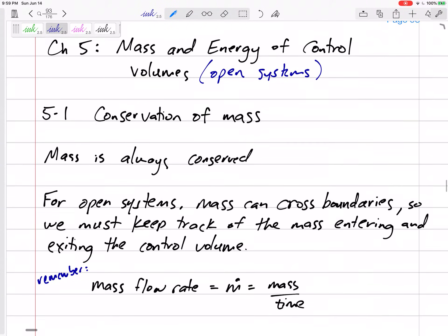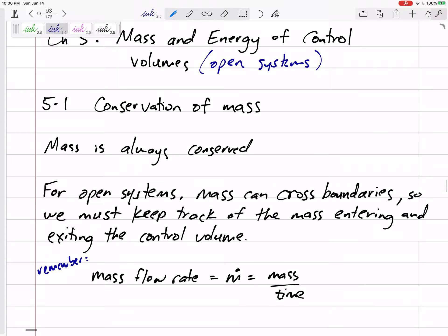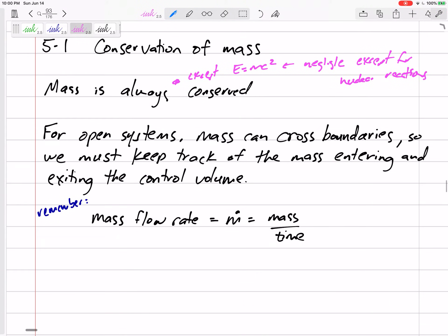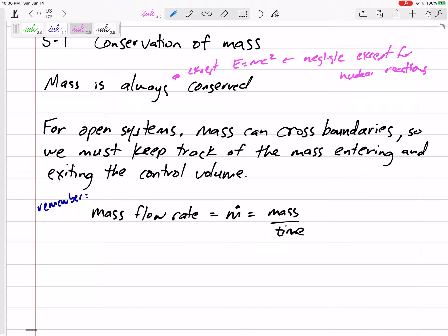And so we need to really be thinking about the mass. We have been talking about energy, conservation of energy all semester. We're still going to talk about conservation of energy, but now that we have open systems, mass is conserved. Mass is always conserved except E equals MC squared. We definitely will not have to worry about that. This will definitely be negligible except for nuclear reactions, and we will not have anything like that. So for open systems, we need to keep track of that mass entering and exiting the control volume.